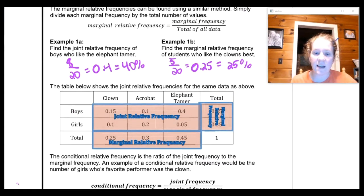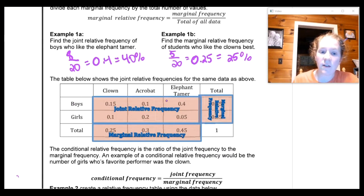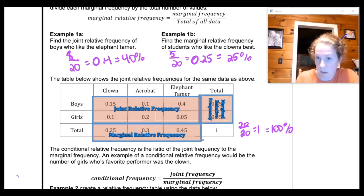We've actually filled out this table here that has all of that information listed for you. This would be what we call a relative frequency table. So I've got 15% of the students surveyed are boys who like clowns. Boys who like elephant tamers was 0.4 or 40%. Total students who like clowns was 25%. Notice that you have a 1 here. That's because if I take this marginal frequency which would be 20 and divide it by the total of all data which would be 20 I get 1 or 100%. So 100% of the people surveyed were surveyed.